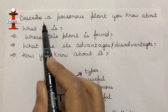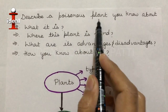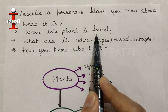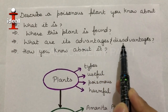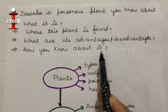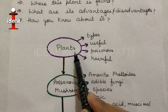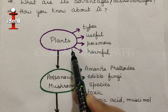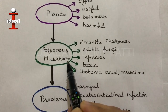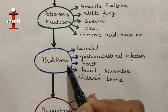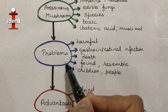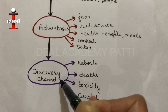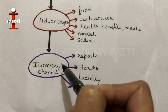Hello students, the next topic we are going to prepare is 'Describe a poisonous plant you know about.' The questions in this topic are: what it is, where this plant is found, what are its advantages and disadvantages, and how you know about it. I am going to talk about a poisonous mushroom, extending the topic with the problems caused if it is ingested by mistake, and I came to know about it from the Discovery Channel.